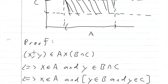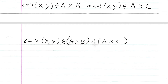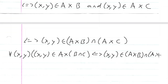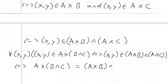So we have shown that (x,y) is an element of A cross (B intersection C) if and only if (x,y) is an element of (A cross B) intersection (A cross C). And that is the proof.